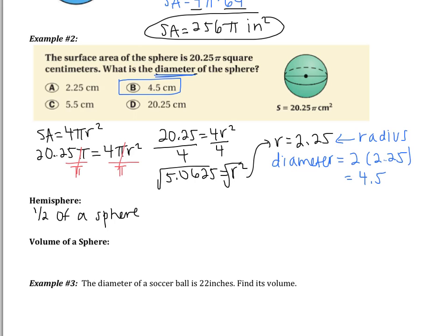Volume is also a pretty easy formula. The volume of a sphere is 4 thirds pi r cubed. Again, this is on your formula cardstock, so it will be provided to you. You just need to know how to use it.